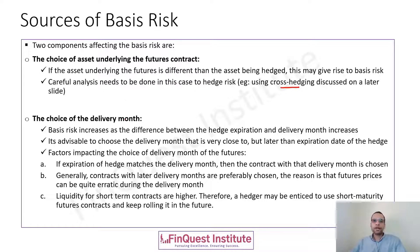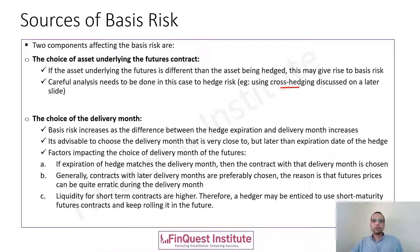The next source is the choice of delivery month. Every futures contract has a specific delivery month — for example, December 2021 or June 2021. Basis risk increases as the difference between the hedge expiration and the delivery month increases. Therefore, we should keep these very close to each other. The delivery date of the futures and the date until which the hedge is needed should not be too divergent. It is advisable to choose a delivery month that is very close to, but later than, the expiration date of the hedge.